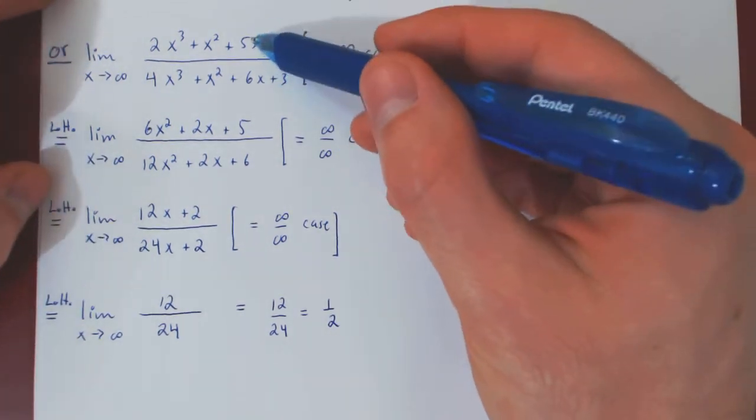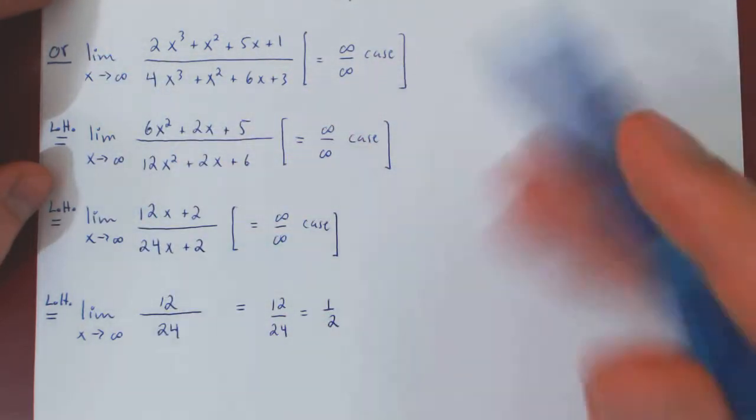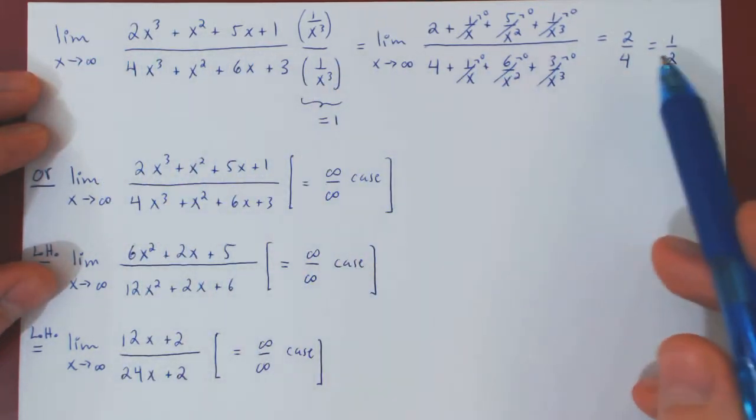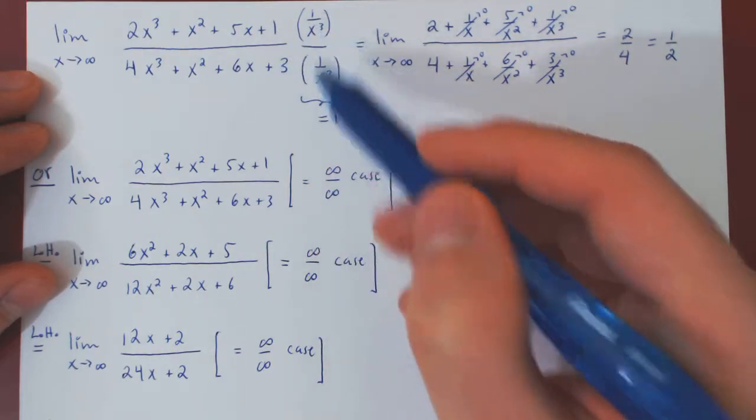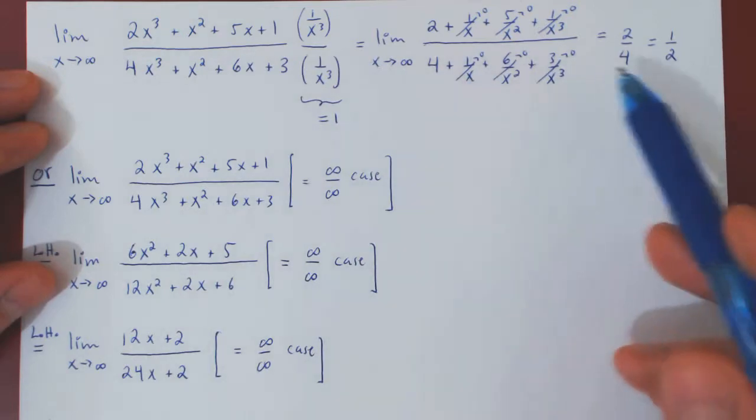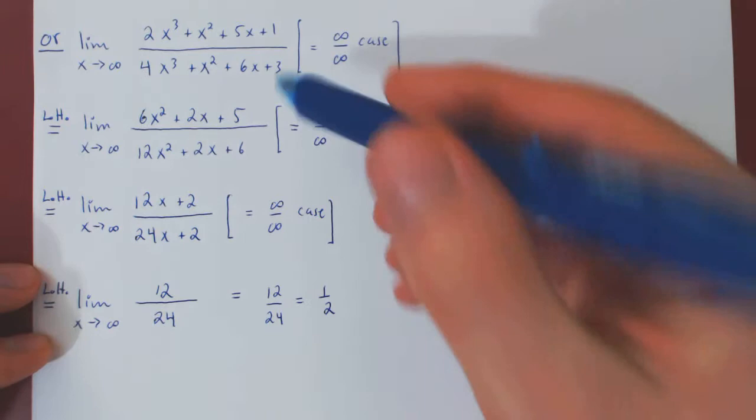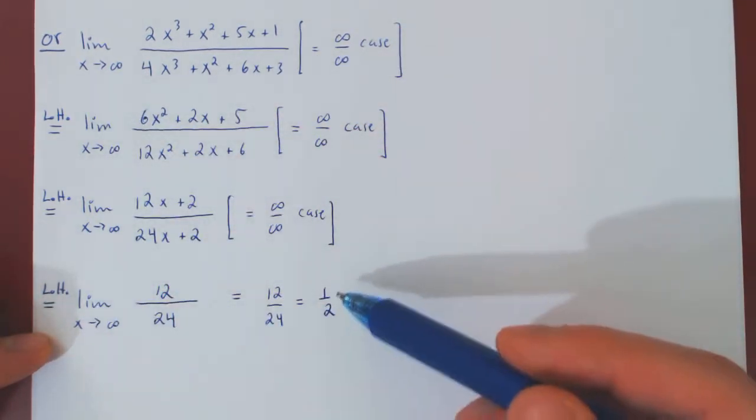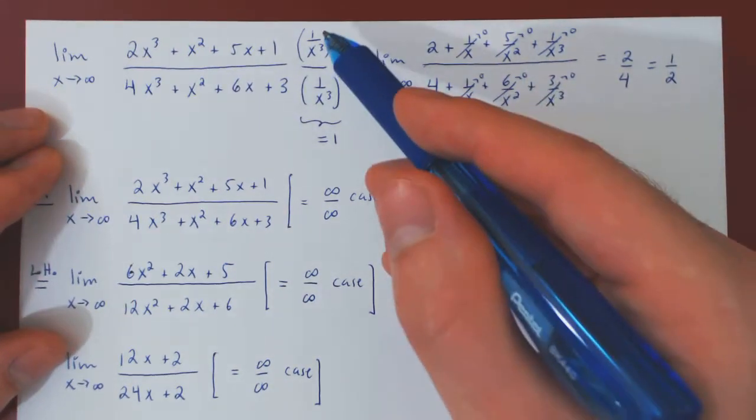But look how much longer the solution with L'Hôpital's rule is compared to our first solution using an elementary technique. Using an elementary method, as this was an elementary limit, we had a one-line solution to the limit being equal to a half. Applying L'Hôpital's rule required three consecutive applications of L'Hôpital's rule to attain the same answer. So clearly here, this method was far better.